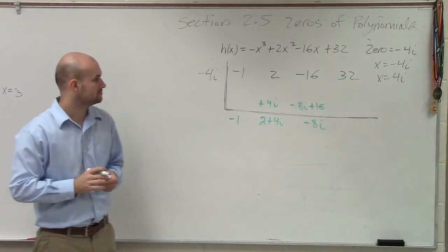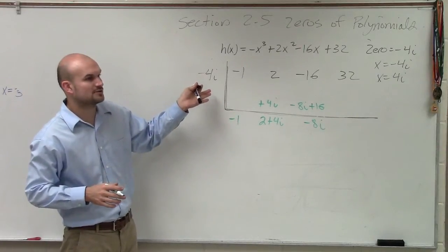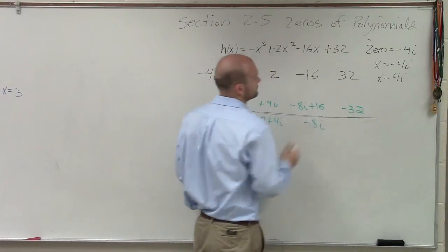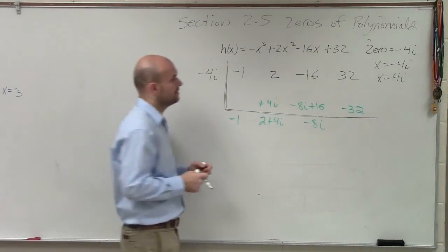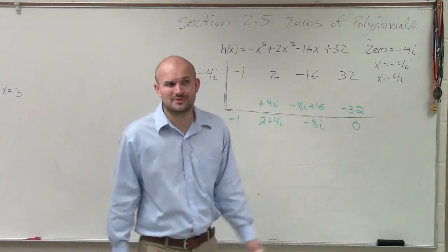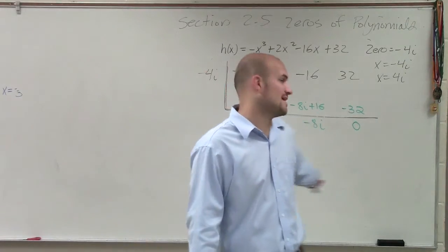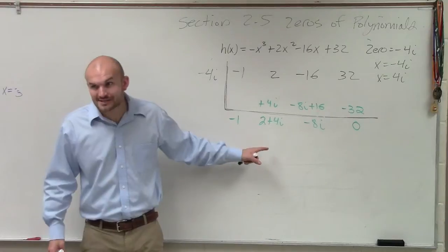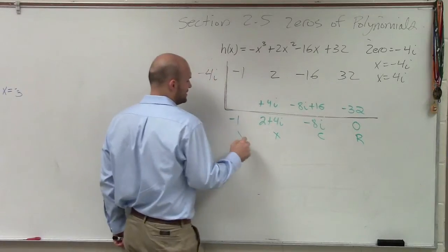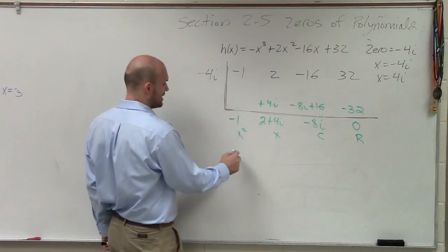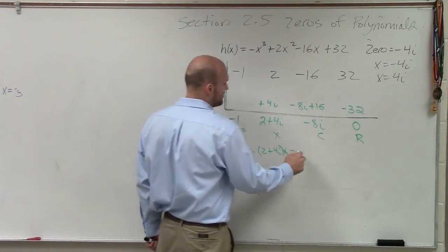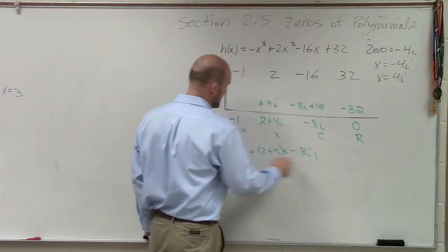And then thirty-two. That becomes thirty-two i squared times negative one, which is negative. Then that becomes a zero remainder. So now you say, okay, you gave us one factor, but now you just gave us a quotient. That is a pretty crazy quotient. If I was going to write that as a polynomial, that would be your remainder, constant, linear, and quadratic. I would say negative one x squared plus two plus 4i times x minus 8i is my other factor.